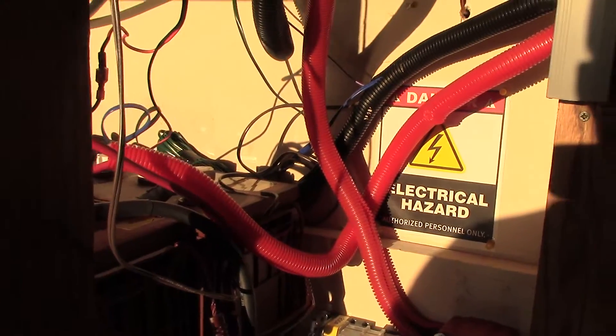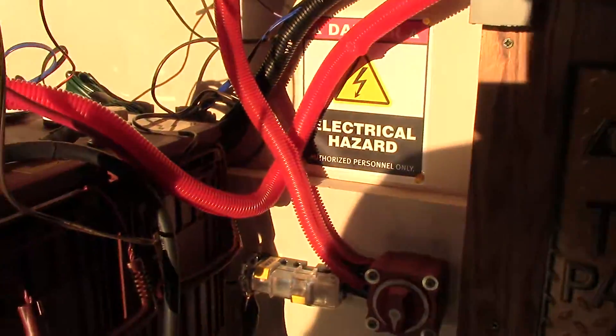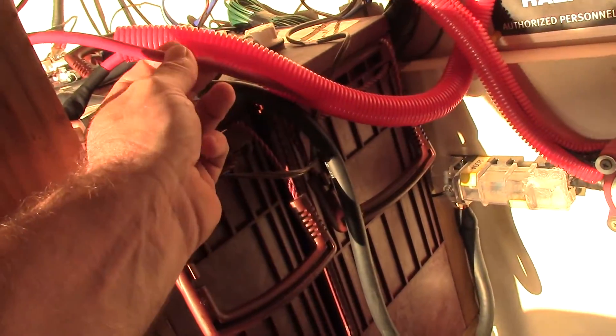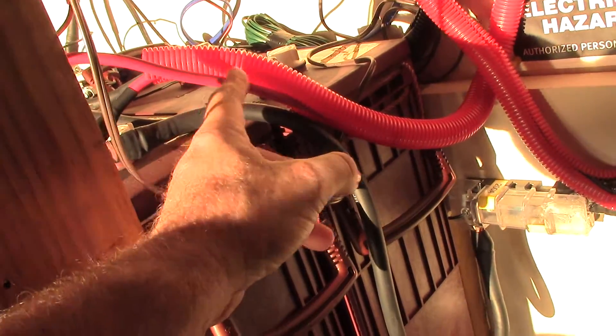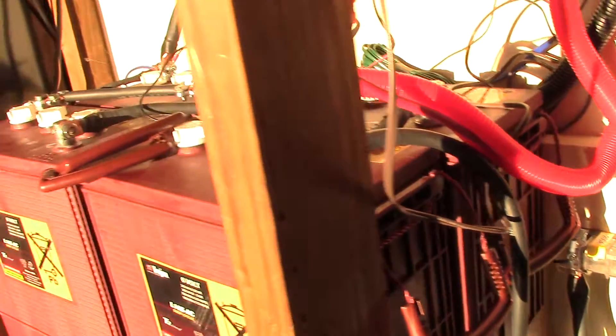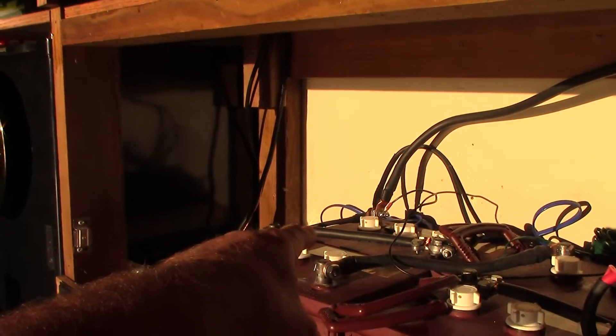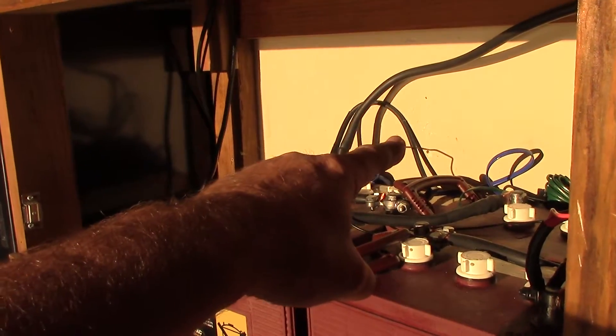The cables for the two solar charge controllers are each color-coded six gauge, right back there too on that post—those are six gauges, those little ones right there.